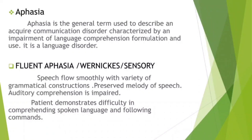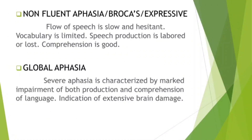Fluent aphasia (Wernicke's or sensory aphasia): speech flows smoothly with a variety of grammatical constructions, preserved melody of speech, but auditory comprehension is impaired — patient demonstrates difficulty in comprehending spoken language and following commands. Non-fluent aphasia (Broca's or expressive aphasia): flow of speech is slow and hesitant, vocabulary is limited, speech production is labored or lost, but comprehension is good. Global aphasia: severe aphasia characterized by marked impairment of both production and comprehension of language, indicating extensive brain damage.